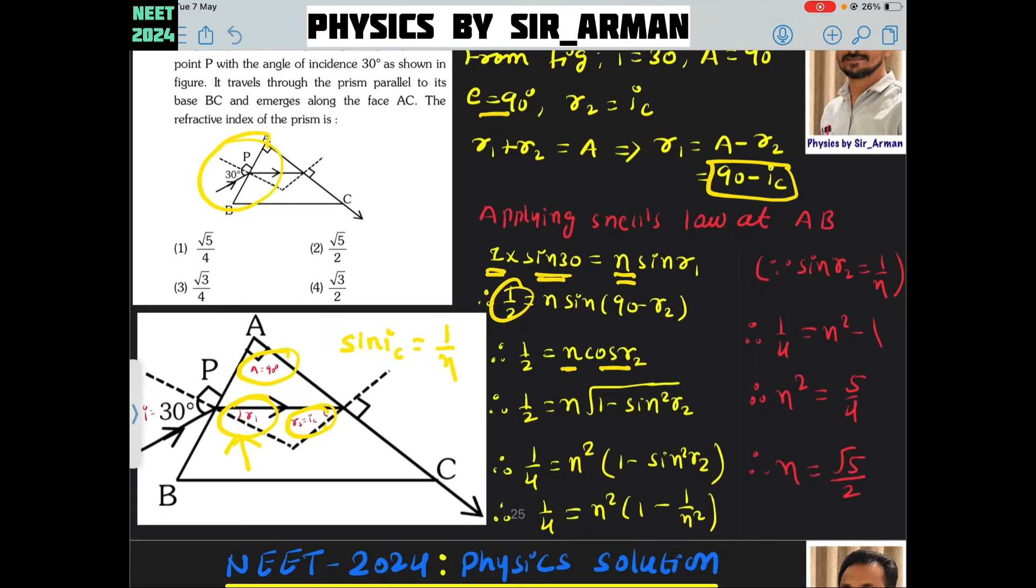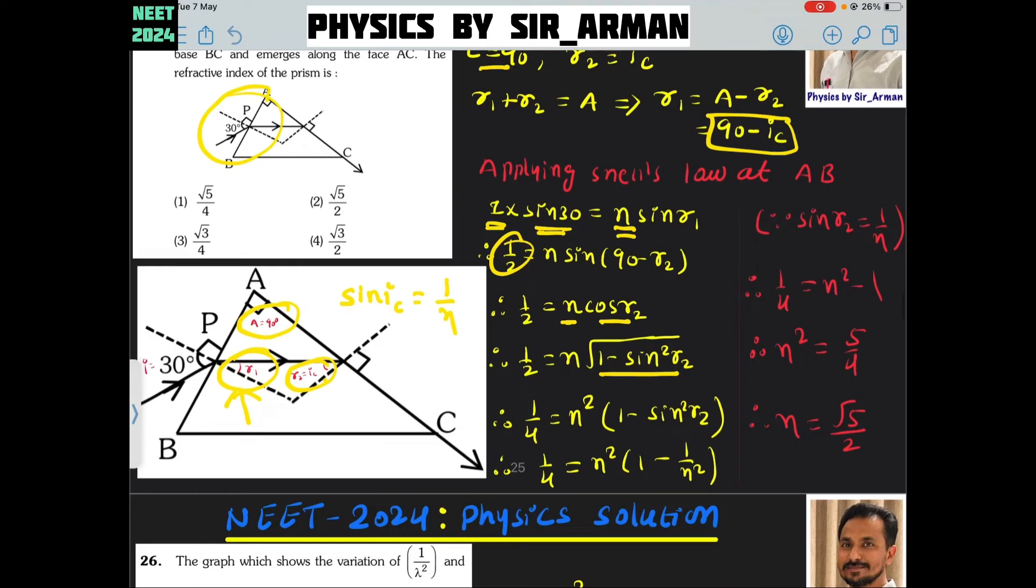Cos theta equals under root 1 minus sine square theta. We are using that and again we are squaring on both sides. 1 by 2 squared is 1 by 4 equals n square times 1 minus sine square theta. Almost we are done with this solution.